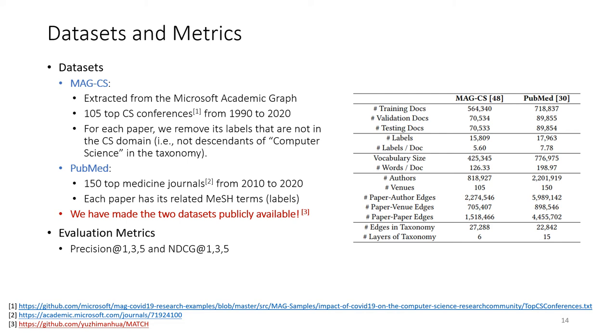For the PubMed dataset, it contains 150 top medicine journals from 2010 to 2020. Each paper is related to several MeSH terms, which are viewed as labels. We have made the two datasets publicly available. And also, following previous studies in extreme text classification, we use Precision@1,3,5 and NDCG@1,3,5 as evaluation metrics.